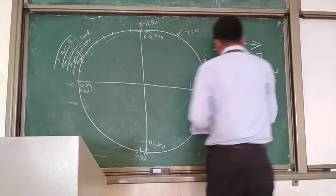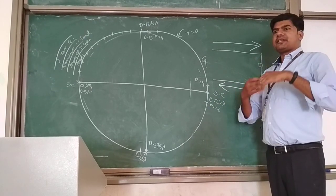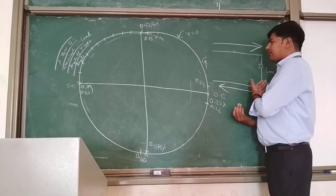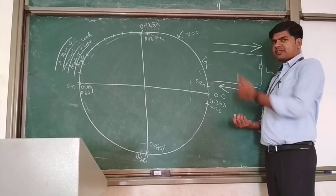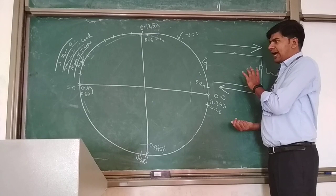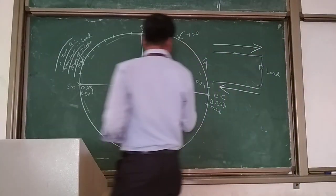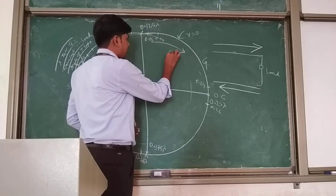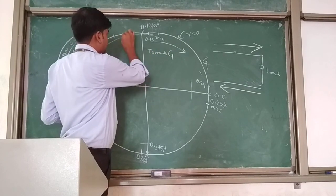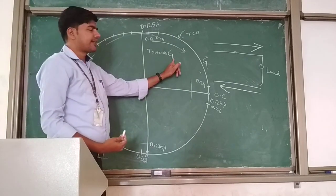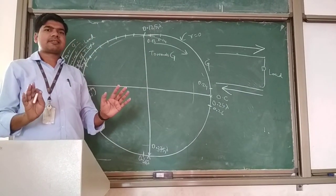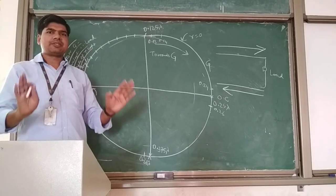When moving from load to generator or generator to load: if the load information is given and generator information needs to be found, we will move from load to generator, and vice versa. The scale for moving towards the generator goes from 0 to 0.5 in the clockwise direction. If you move towards the load, you move in the opposite direction.